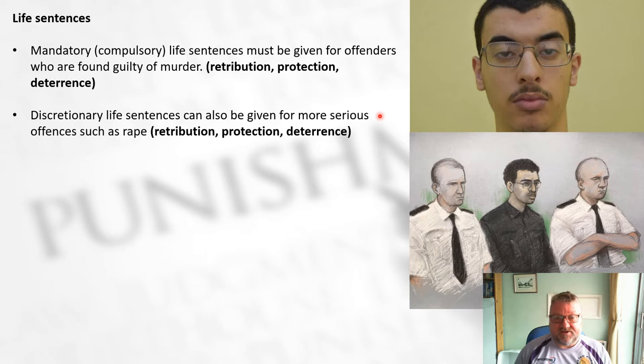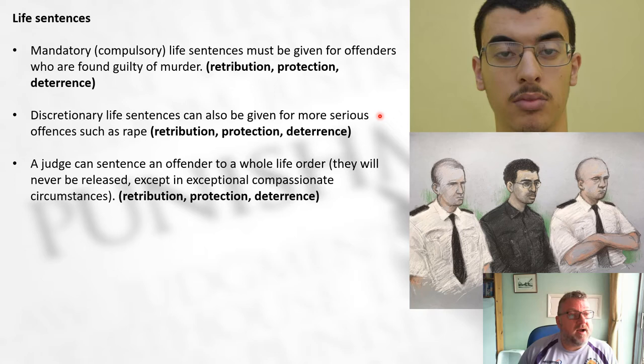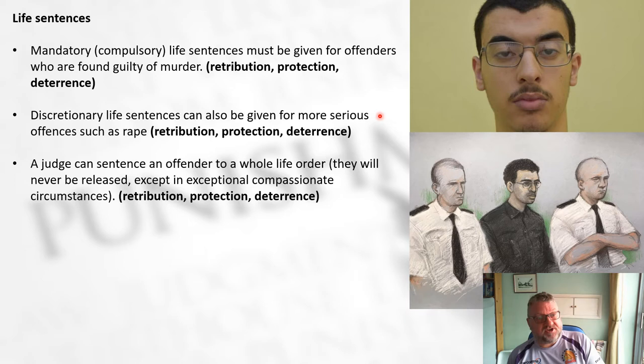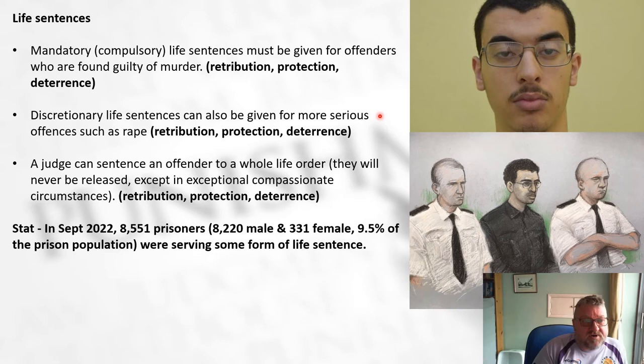It is mandatory if you commit a second rape. A judge can also sentence an offender to a whole life order, meaning they will never be released except in exceptional compassionate circumstances - again retribution, protection, and deterrence. In September 2022, there were 8,551 prisoners serving life sentences, of which about 8,220 were male and 331 were female.